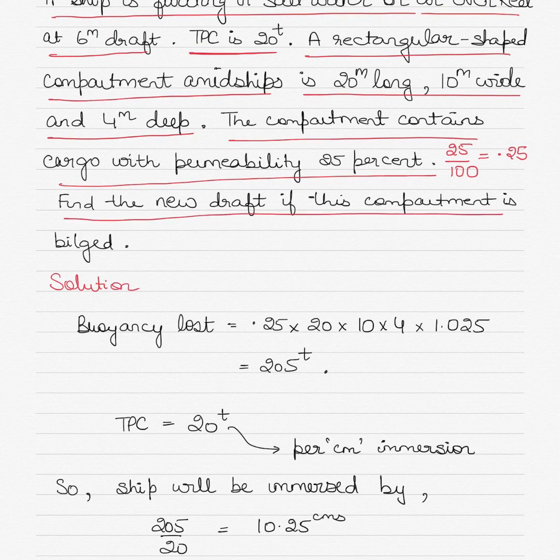Now this question is different from the one we have done previously on permeability, and I'll show you how and why we're doing it differently. In this case here, the buoyancy which has been lost by the compartment will be the volume of the compartment, here is 20 by 10 by 4, then we have the permeability here, which is denoted by the letter μ (mu).